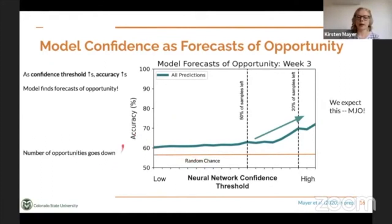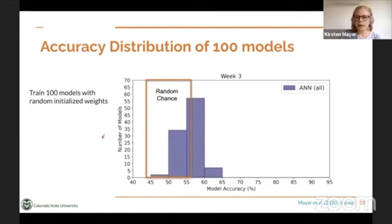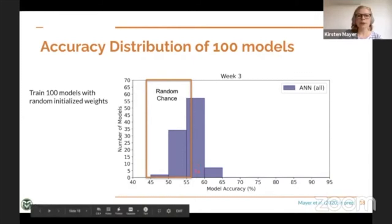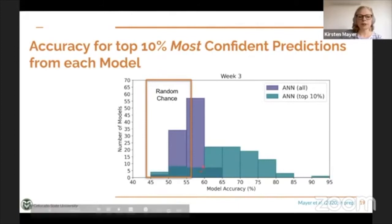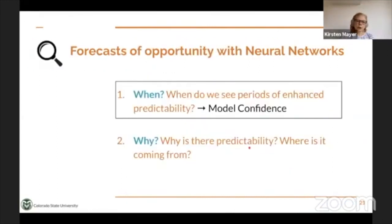To make sure this wasn't a fluke, we trained the model 100 different times with randomly initialized weights and compared accuracy when ignoring confidence versus looking at the 10% most confident predictions. When ignoring confidence and looking at all predictions, accuracy is around 57%. But when we look at the 10% most confident predictions from each model, we see a stark increase in accuracy up to about 67% across all 100 models. So model confidence can really identify these forecasts of opportunity.